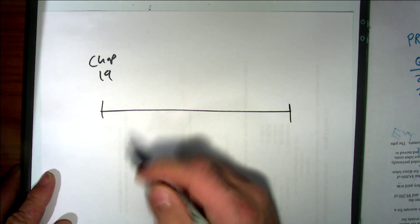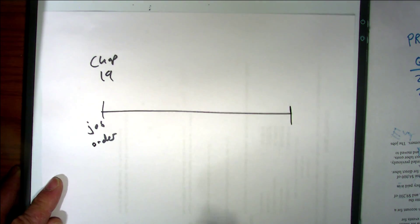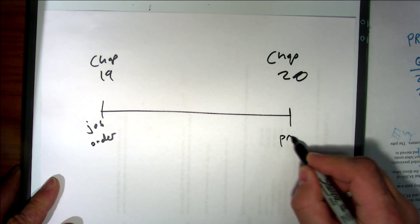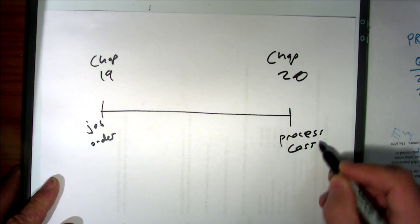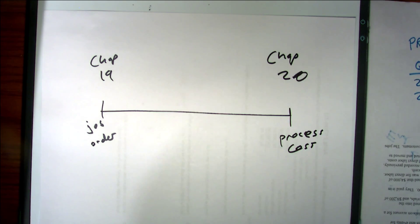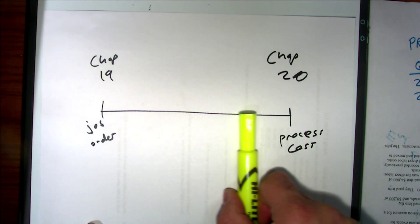That's it for chapter 20 — it will not be on the next test. We talked about chapter 19, which was job order costing — like a custom built house, completely unique, built to order. Then we talked about chapter 20, which was process costing — mass produced items like this Sharpie right here, that they're producing all the time.